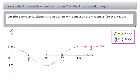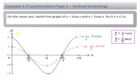Now looking at y equal to cos x, you have to stretch this vertically by 2 units. So you need a 2 here and a negative 2 here. Instead of starting from 1 for y equal to cos x, they start from 2, back to 0. Negative 1 becomes negative 2, back to 0 and back to 2 again. You can see that the points at the x-axis remain unchanged. So this is the graph for y equal to 2 cos x.